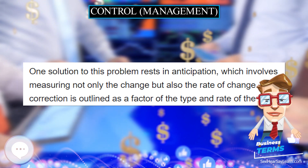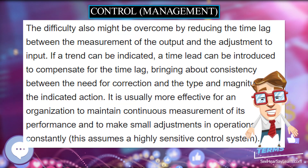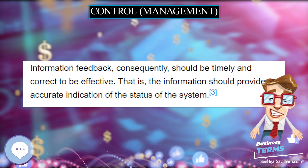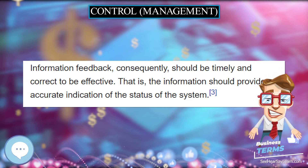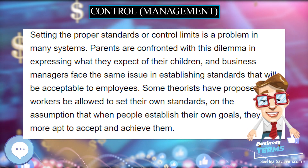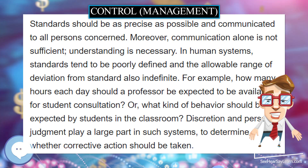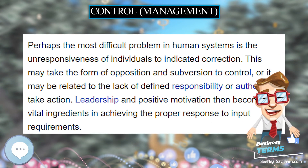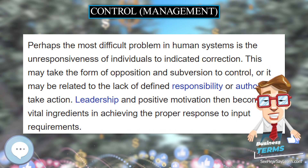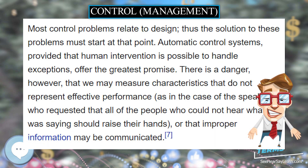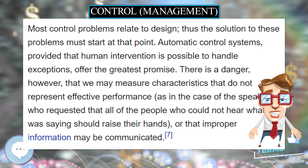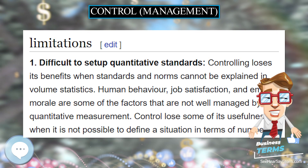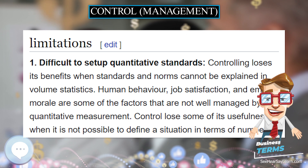The fourth element of control, the activator, is the corrective action taken to return the system to its expected output. The actual person, device, or method used to direct corrective inputs into the operating system may take a variety of forms. It may be a hydraulic controller, an employee directed to rework parts that failed quality inspection, or a school principal who decides to buy additional books. As long as a plan is performed within allowable limits, corrective action is not necessary; however, this seldom occurs in practice.